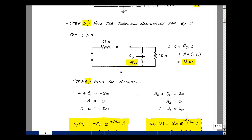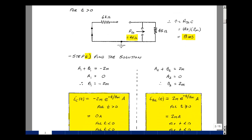And then the last step in our algorithm is to find the solution. We found that a1 plus b1 was minus 2 milliamps, a1 was 0, so therefore b1 is equal to minus 2 milliamps. So i sub c is equal to a1 plus b1 e to the minus t over tau, which is minus 2 milli times e to the minus t over 8 milliseconds. This is true for t greater than 0. For t less than 0, it was equal to 0, so we have a discontinuity here. In other words, we jumped from 0 to minus 2 milliamps.